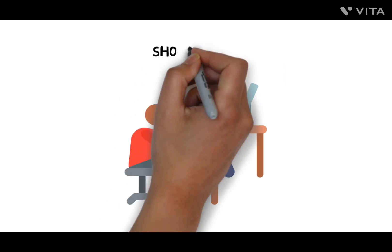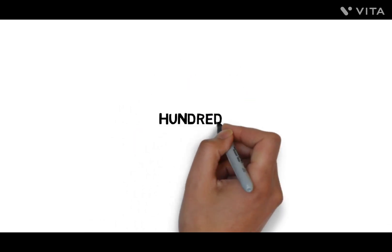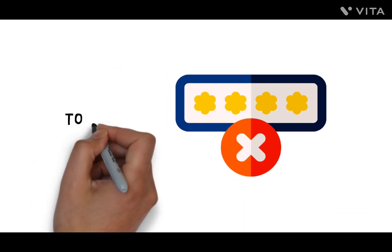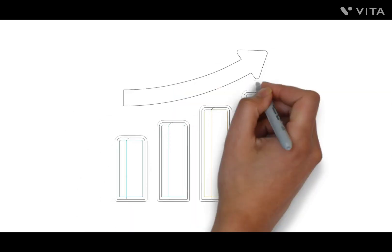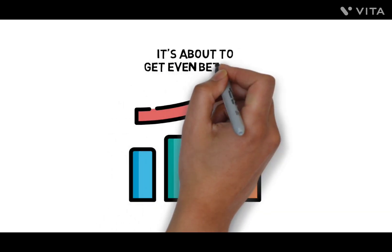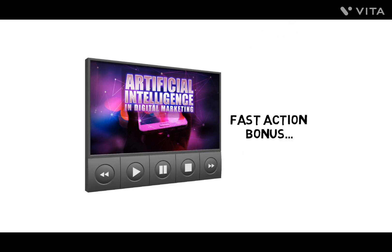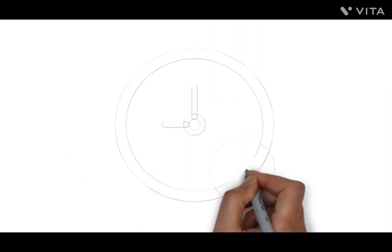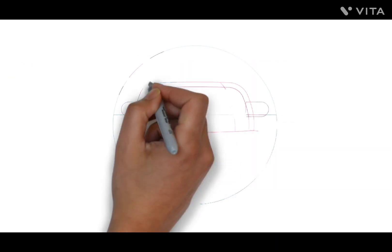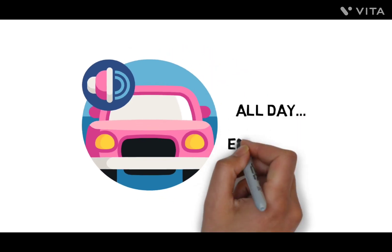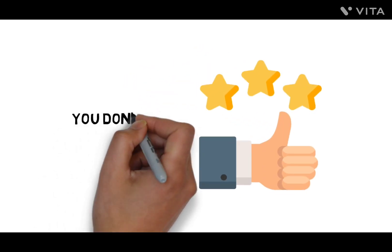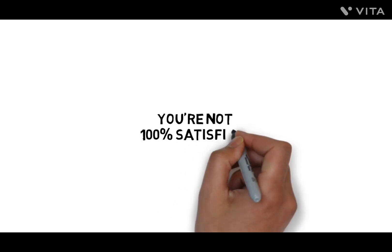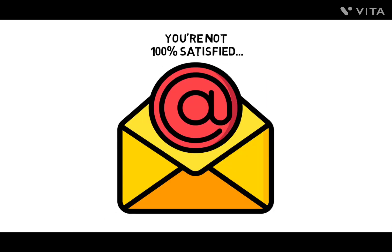This is the next best thing to having an expert right beside you showing you how it's done. You'll avoid the most common mistakes and notice immediate positive results. When you upgrade today, you'll also get an exclusive fast-action bonus: high-quality MP3s of the entire video version of the training — valued at $27 — so you can listen in the car, at home, or at the office. You get a full 30 days to go through the video training. If for any reason you're not 100% satisfied, simply let us know and you'll get a full refund — no questions asked.